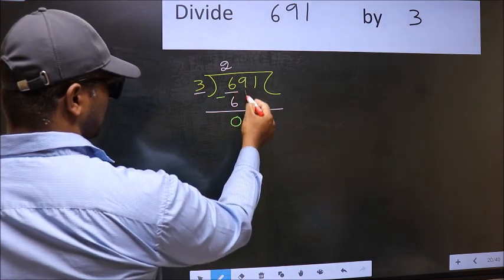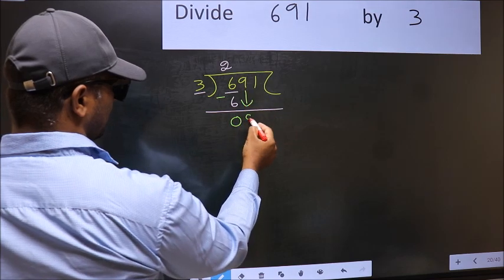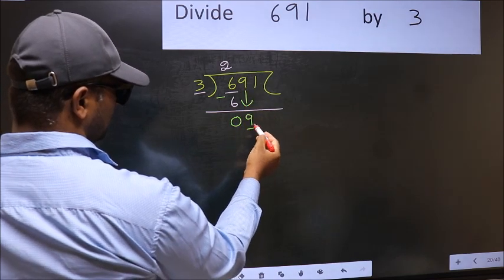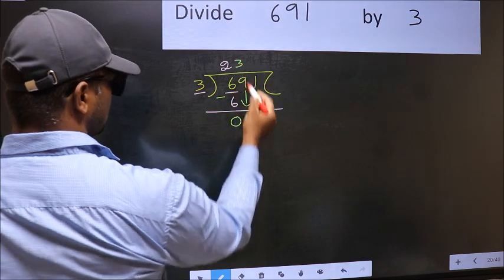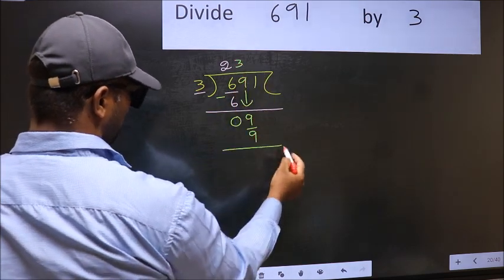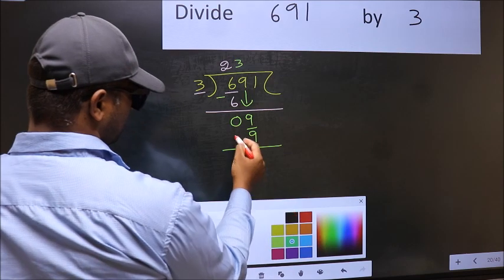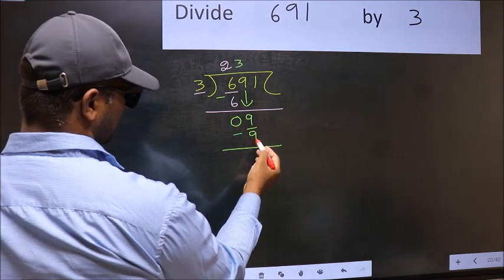After this, bring down the beside number. So 9 down. Now 9. When do we get 9 in 3 table? 3 times 3 is 9. Now you should subtract. 9 minus 9, 0.